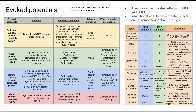Barbiturates have a similar effect to propofol, though there are limited studies on barbiturate use with motor evoked potentials. Opioids tend to have minimal effect on evoked potential amplitude, which is favorable — you can use opioids even at high doses and have no problems with sensory and motor evoked potentials.